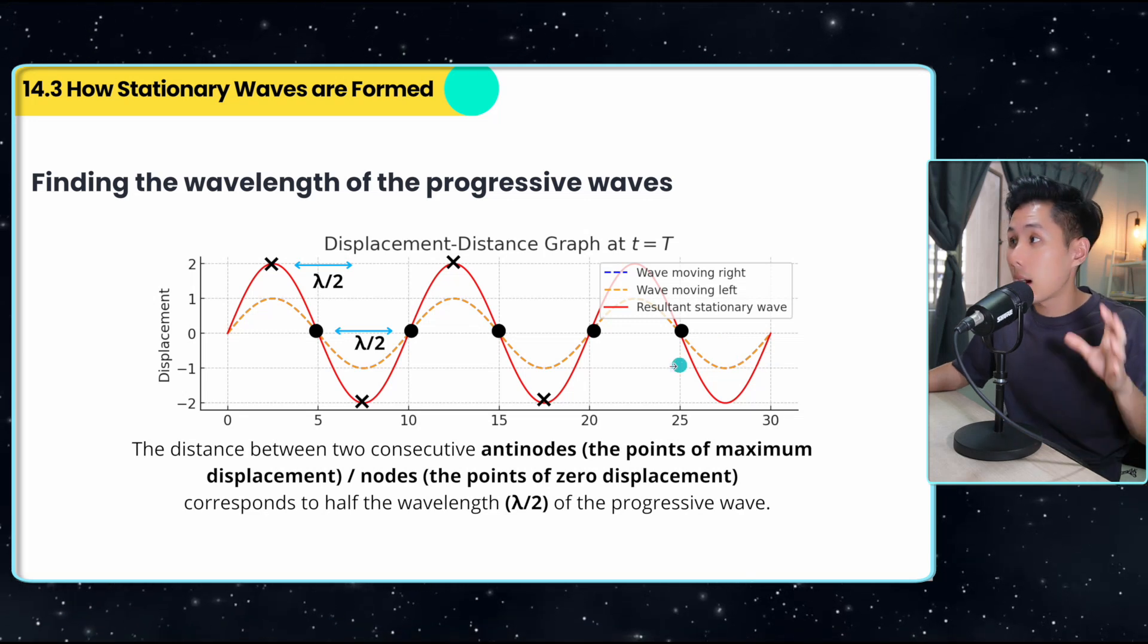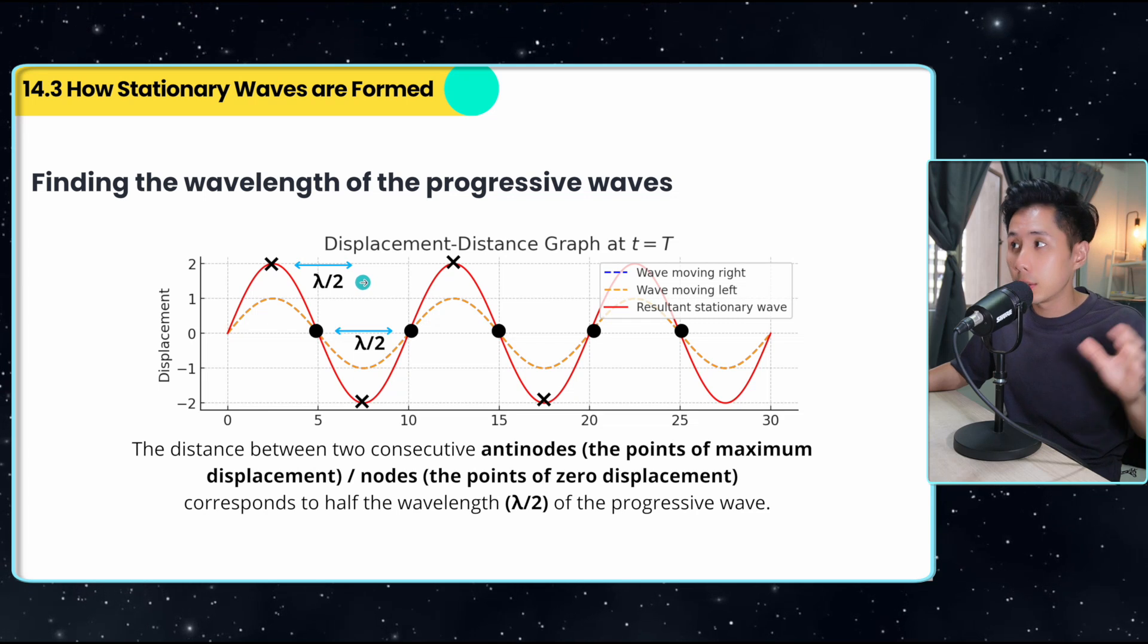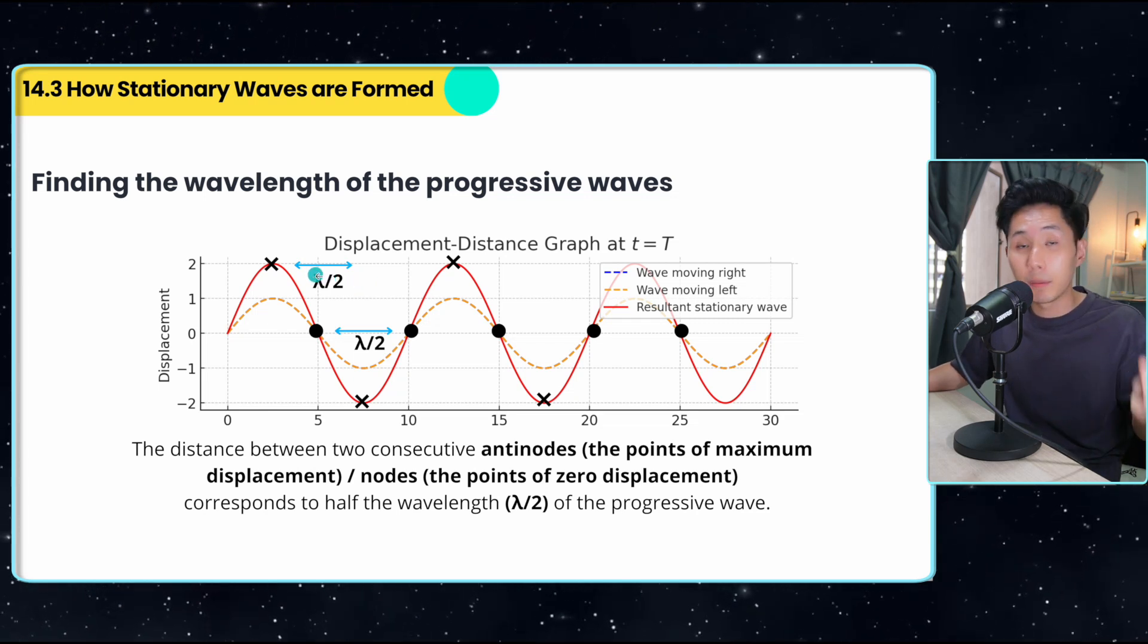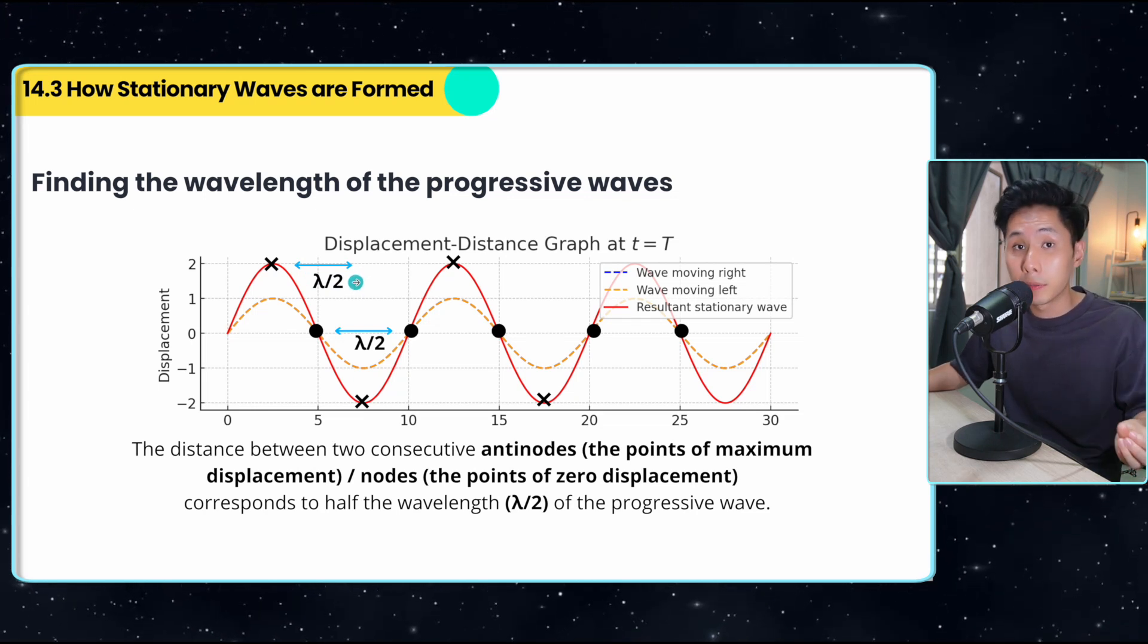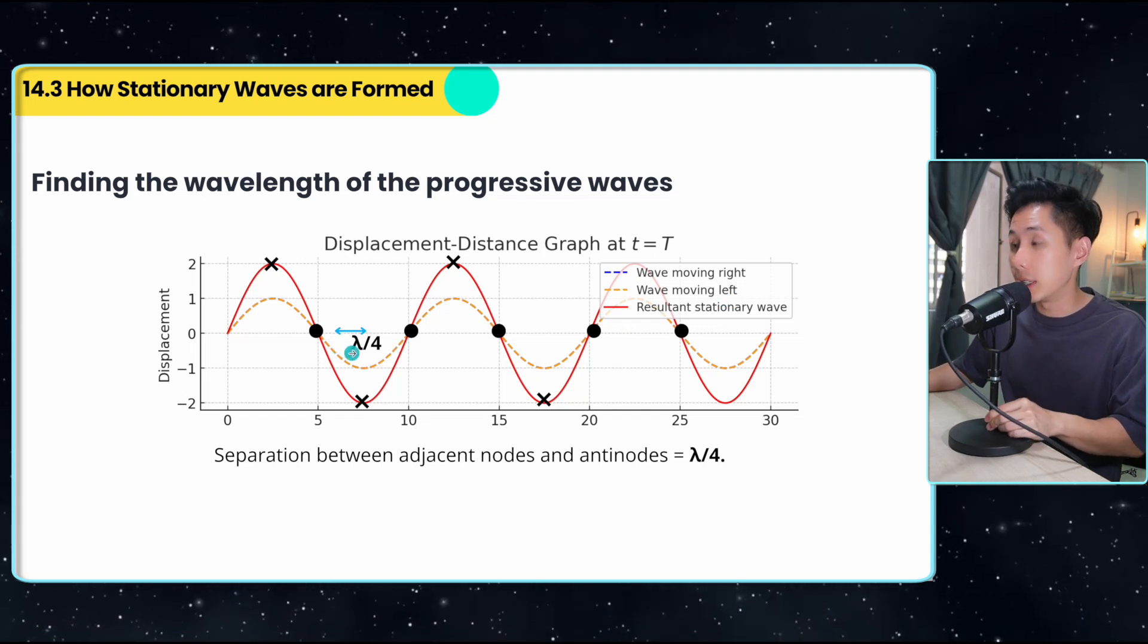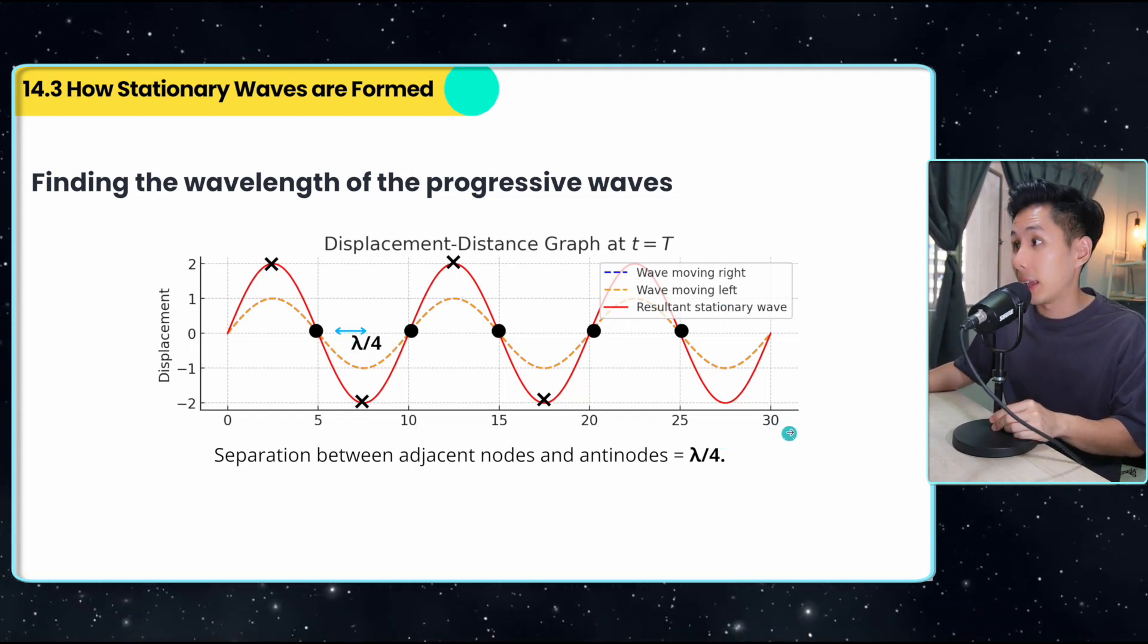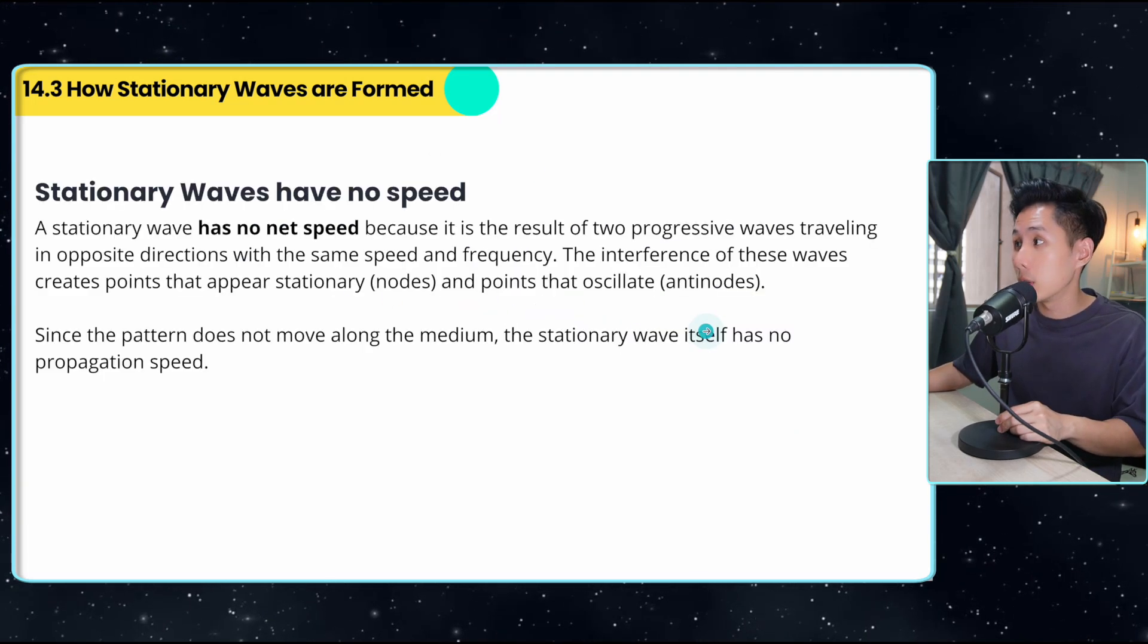So from the graph, here are a few things that you can derive. The distance between two consecutive nodes and two consecutive antinodes is equal to the wavelength divided by two, half of the wavelength. So this information is going to be useful when you're calculating distance in a while. So the separation between adjacent node and antinode will therefore be lambda over four, a quarter of the wavelength. So we kept on the formula of speed, V equal to F lambda. We're also going to use this.